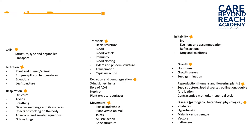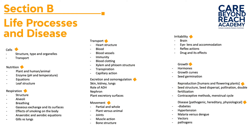In Section B, Life Processes and Disease, you have roughly eleven topics to cover. Starting with cells, which includes the structures, the organelles, the different types of cells, and how substances move across the cell — specifically osmosis and diffusion. After cells, you look at nutrition, which covers both autotrophic and heterotrophic nutrition. Autotrophic occurs in plants and some bacteria through photosynthesis and chemosynthesis.